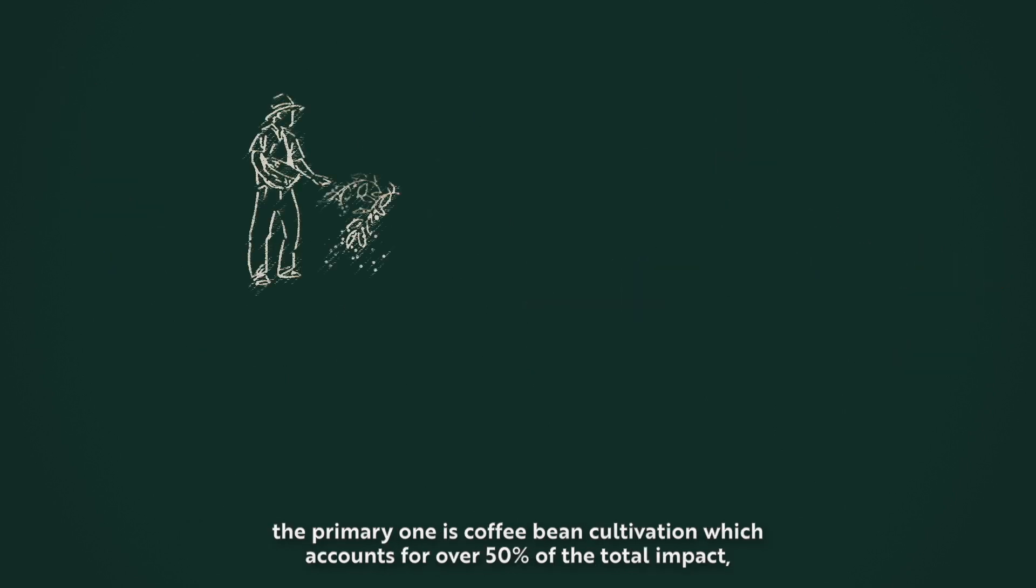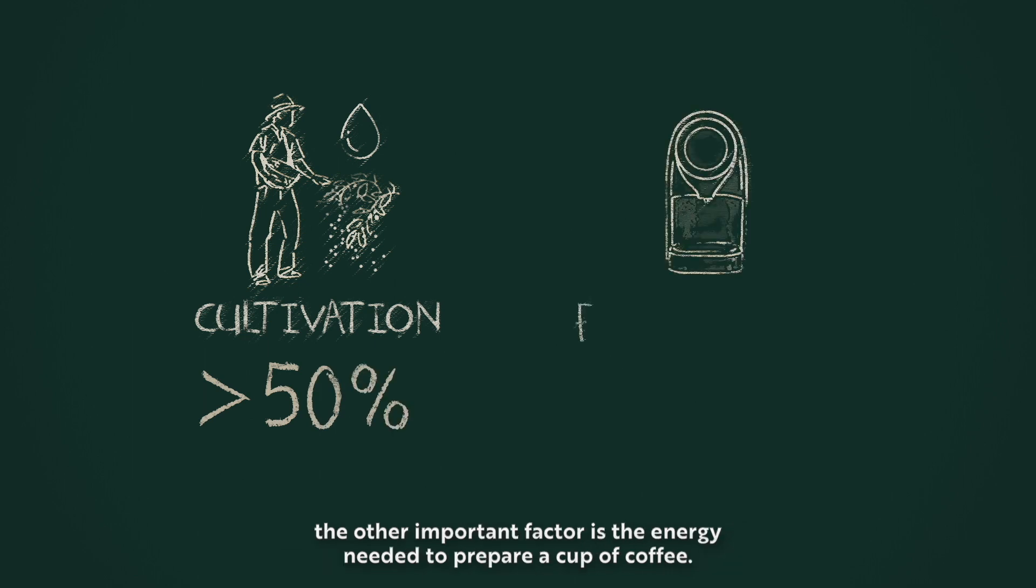The primary one is coffee bean cultivation, which accounts for over 50% of the total impact. The other important factor is the energy needed to prepare a cup of coffee.